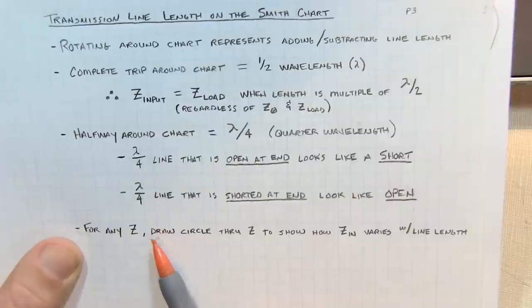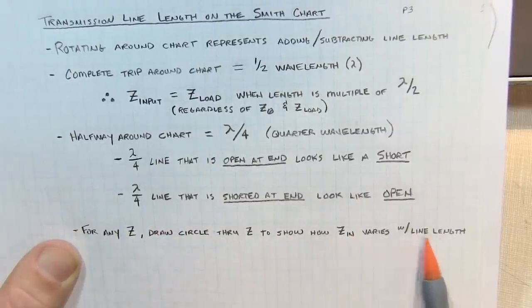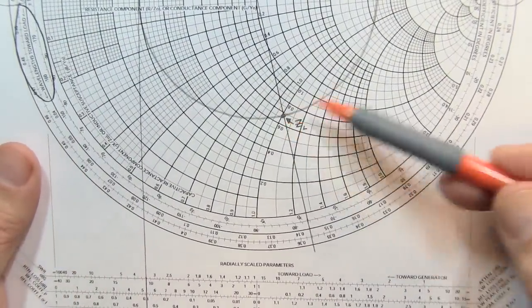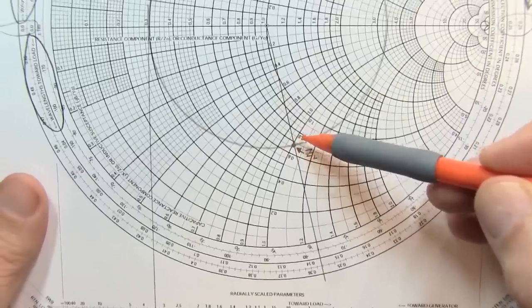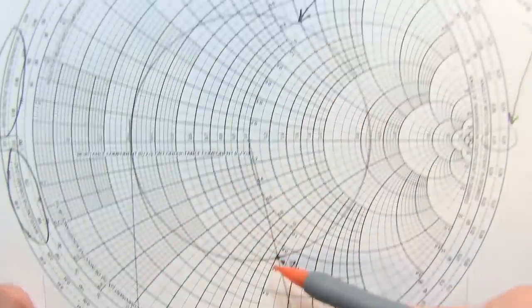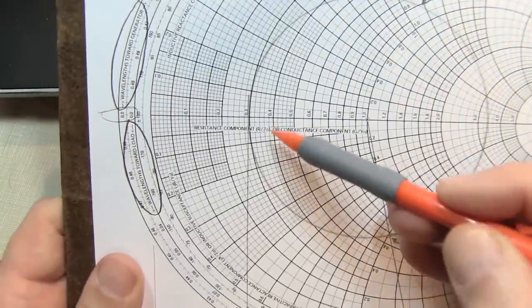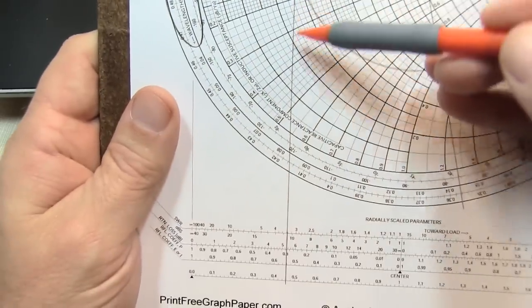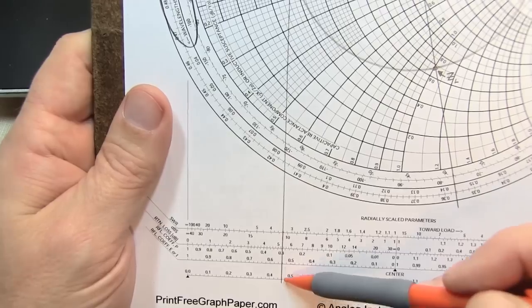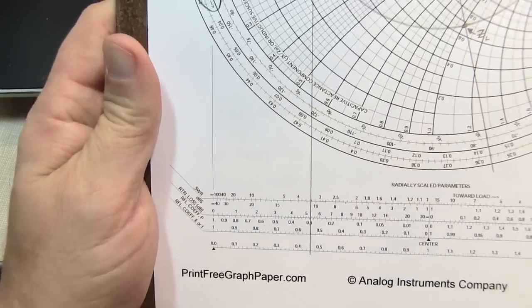For any impedance, if you draw a circle through that impedance, you can show how that impedance varies with line length. Here's our initial impedance ZL. If we draw a circle that coincides with that radius, we've got our constant VSWR circle. Where that crosses the zero reactance line, we drop a perpendicular line straight down to the measurements we transferred earlier to determine SWR, return loss, et cetera.